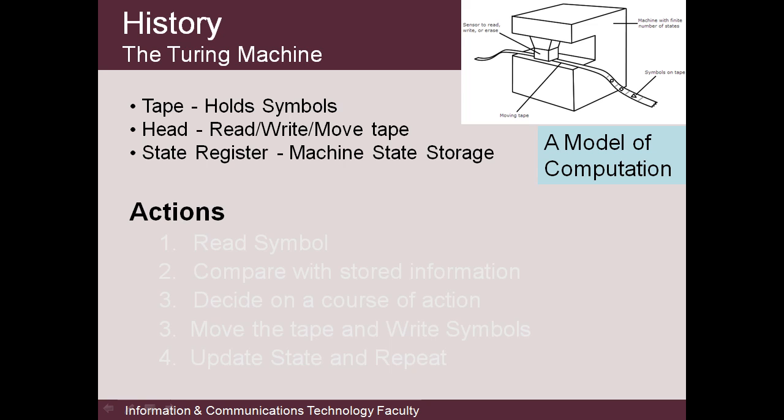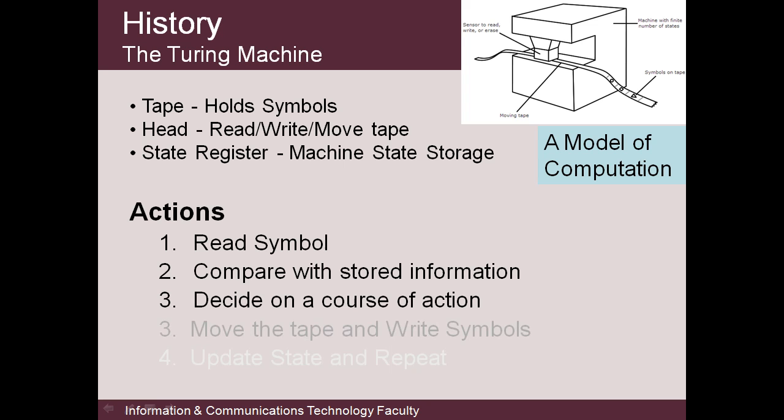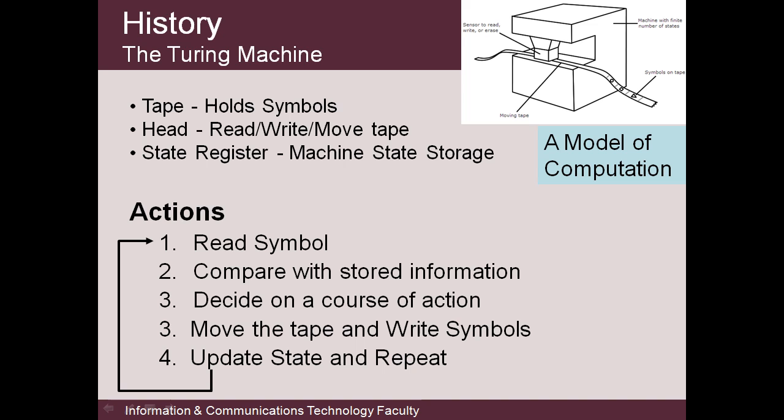The Turing machine, comprising magnetic state memory, reading head, and state register, is a model of computation rather than the model of a computer. The machine cycles through stages to read input values, compare them with stored information, decide on the course of action, and write values back to the output. These form the basis of programming instructions that can be used to implement algorithms to solve problems. It turns out the machine is capable of performing any mathematical operation expressed as an algorithm. A computer instruction set or programming language is said to be Turing-complete if it can simulate the behavior of a single-tape Turing machine. Turing reformulated the mathematical issue of decidability in terms of whether an algorithm to solve a given problem could be found, and he found that some problems can't be solved by an algorithmic procedure. He envisaged combinations of Turing machines with other structures he called oracles to address these.